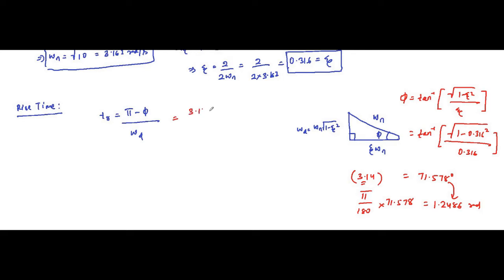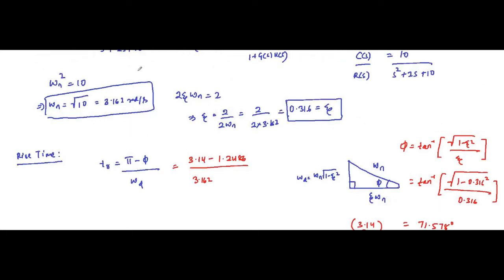Substituting into the rise time formula: tr = (3.14 − 1.2486) / ωd, where ωd = ωn√(1 − ζ²) = 3.162 × √(1 − 0.316²). The result is approximately 0.6304 seconds, so rise time ≈ 0.63 seconds.